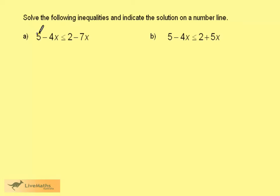We want to solve the following inequalities and indicate the solution on a number line. The first is 5 minus 4x is less than or equal to 2 take away 7x.